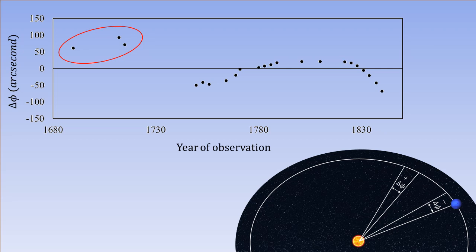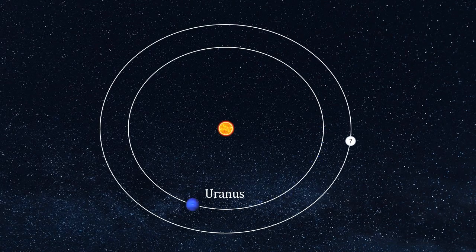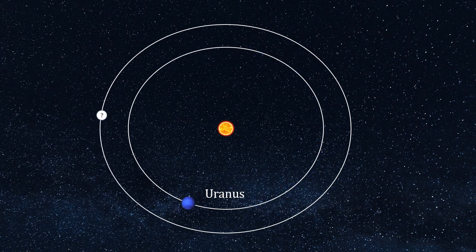But Le Verrier was not among those. He was a firm believer in the sanctity of the gravitational laws. He believed that these deviations are due to attraction of yet another undiscovered planet orbiting at an even greater distance.